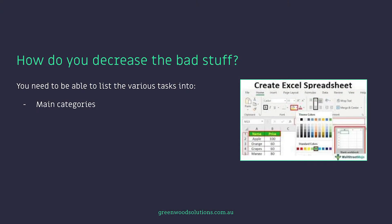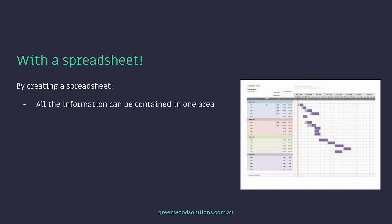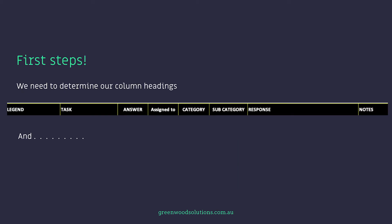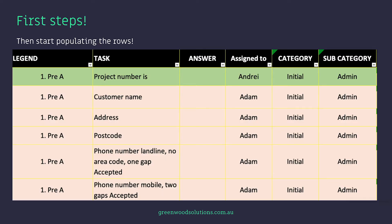So how do you decrease the bad stuff? You need to be able to list the various tasks into some categories — main categories, some subcategories, the name of the task, ideally who's assigned to it, the answer, and the response. How do you do that? With a spreadsheet. By creating a spreadsheet, all the information can be contained in one area. If you convert the information to a table, you can filter that information, and you can also create Gantt-type functionality — a Gantt chart. The first step is to determine your column headings and start populating the rows.